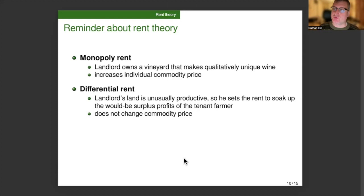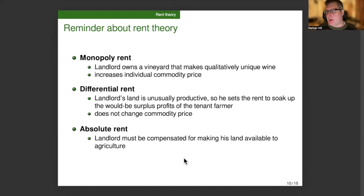And then the third type of rent is absolute rent, where a landlord must be somehow compensated, even if he has terrible land. If he's going to make his land accessible to cultivation, he's going to require some kind of compensation for that. And this increases the sector-wide commodity price. The price of corn has to be high enough to allow the landlord to make some deduction, no matter what the conditions of productivity of his land are. To review the differences in terms of their effect on price, monopoly rent increases the price of the specific individual commodity that's monopolized. Then differential rent doesn't change the price of the commodity at all, and absolute rent adds a certain amount to the price of all the commodities in a whole sector.